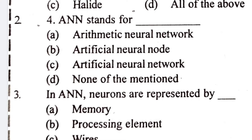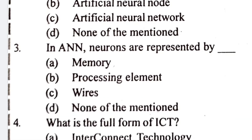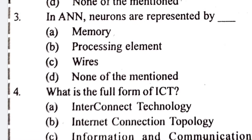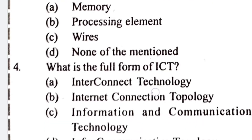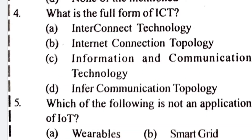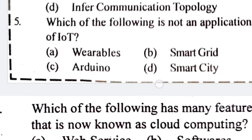Question two: ANN stands for Artificial Neural Network. Question three: in ANN, neurons are represented by option B — processing element. Question four: the full form of ICT is Information and Communication Technology.